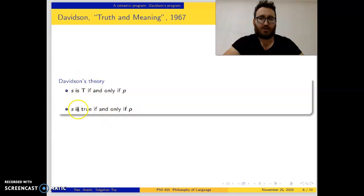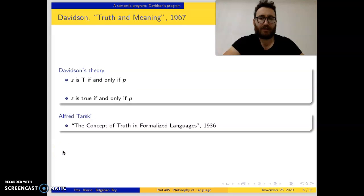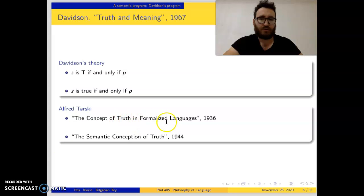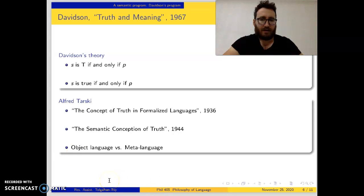Davidson borrows this notion from Alfred Tarski. Tarski is a mathematician and logician who is not really interested in the semantics of natural languages. Rather, he is interested in a formal definition of truth in artificial languages like logic or programming languages. You can check his notion of truth in his articles 'The Concept of Truth in Formalized Languages' and 'The Semantic Conception of Truth'.